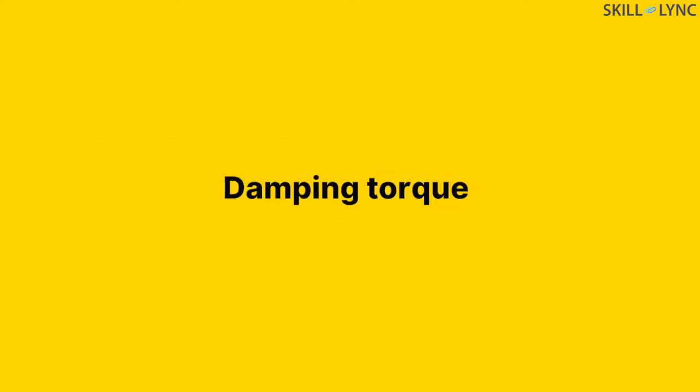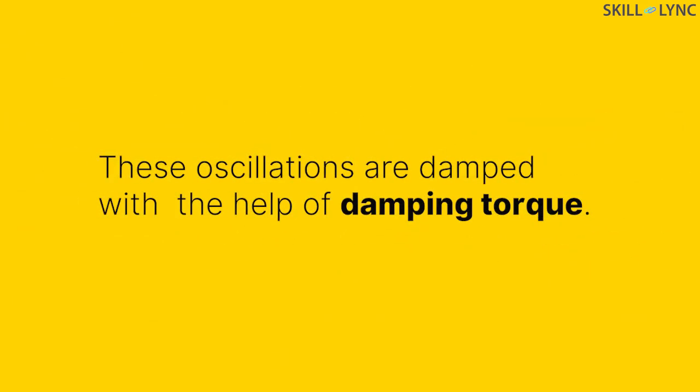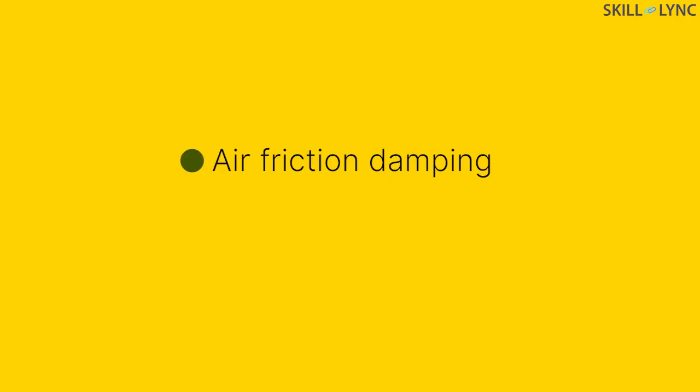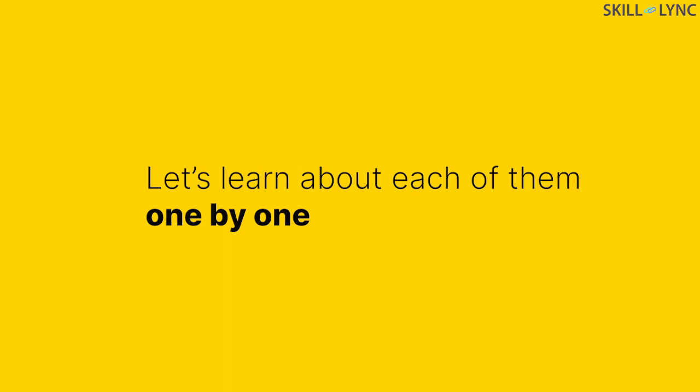Now, moving to the third and final torque on the pointer which is the damping torque. When the controlling torque and deflecting torque acts on the pointer due to inertia, the pointer will oscillate before it comes to rest. These oscillations are damped with the help of damping torque. Damping torque can be provided by air friction damping, eddy current damping and fluid friction damping. Let's learn about each of them one by one.